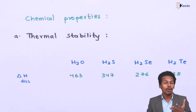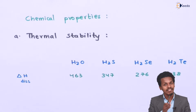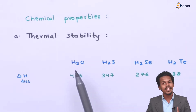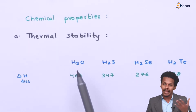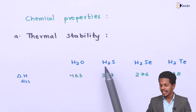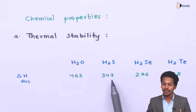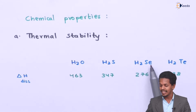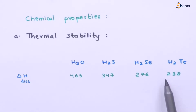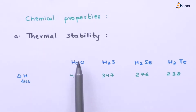Here are some data related to bond enthalpy — the amount of energy required to break the bond between the central atom and hydrogen. For H2O, the energy required to break the O–H bond has been found to be 463 kJ/mol. For H2S it is 347 kJ/mol. For H2Se it is 276 kJ/mol. And for H2Te it is 238 kJ/mol. This clearly indicates that water is very much thermally stable compared to the rest.